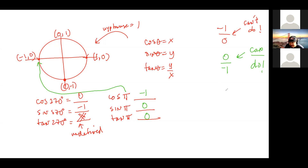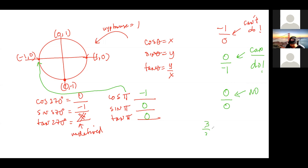Last thing before I go to my meeting: can you do zero divided by zero? You might argue three over three is one, two over two is one, nine over nine is one — so zero over zero should be one? No. You still can't do it. Zero can never be in the denominator.